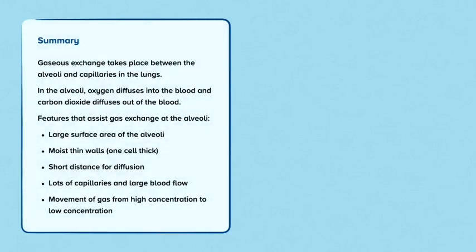In summary, gaseous exchange takes place between the alveoli and capillaries in the lungs. In the alveoli, oxygen diffuses into the blood and carbon dioxide diffuses out of the blood. There are a number of features that assist gaseous exchange at the alveoli. The alveoli have a large surface area, the alveoli have moist thin walls and the capillaries are only one cell thick. There is a short distance for the diffusion of oxygen and carbon dioxide. The alveoli have lots of capillaries and a large blood flow and the movement of gas from a high concentration to a low concentration.